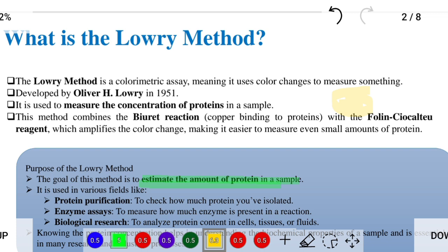For the Bradford assay, we need to detect the absorbance at 595 nanometers. But here we use the wavelength of 750 nanometers. This method was developed by Oliver H. Lowry in 1951, which is used to measure the concentration of proteins in a sample.